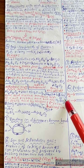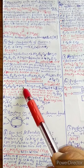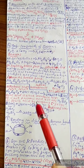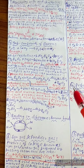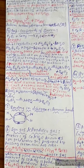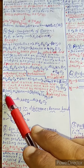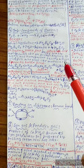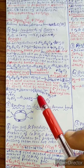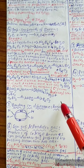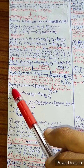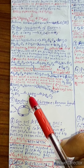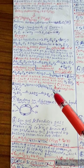Boric acid is a weak monobasic acid. It is not a protonic acid but acts as a Lewis acid by accepting electrons from the hydroxyl ion. The reaction: B(OH)₃ + 2H₂O → [B(OH)₄]⁻ + H₃O⁺. On heating, H₃BO₃ → HBO₂, then further heating gives B₂O₃.